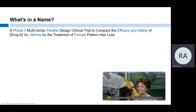Let's pick out the key terms from this protocol title: A Phase III multi-center parallel design clinical trial to compare the efficacy and safety of drug A versus vehicle for the treatment of female pattern hair loss. Phase III is a later development stage, which typically will have a much larger sample size in the hundreds or even thousands of patients. When thinking about feasibility and resources, it will be important to know how many patients your site will be expected to enroll.